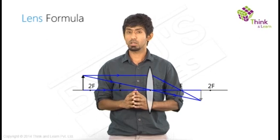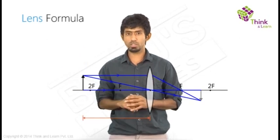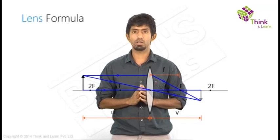So now what do you have with you? A chance to play. And what do you want to connect? U, let's call it, the object distance. V, the image distance. And F, the focal length.